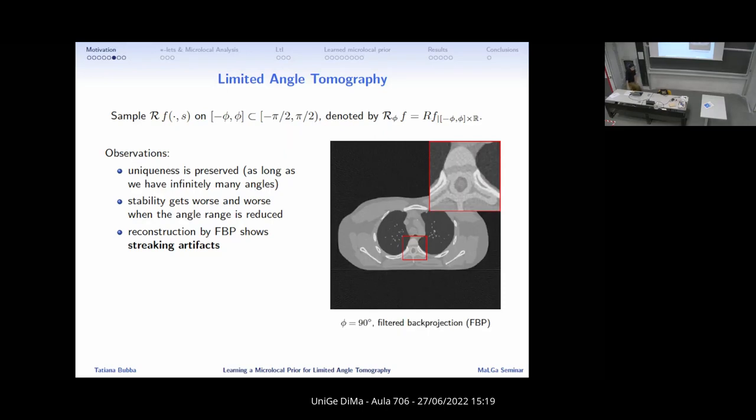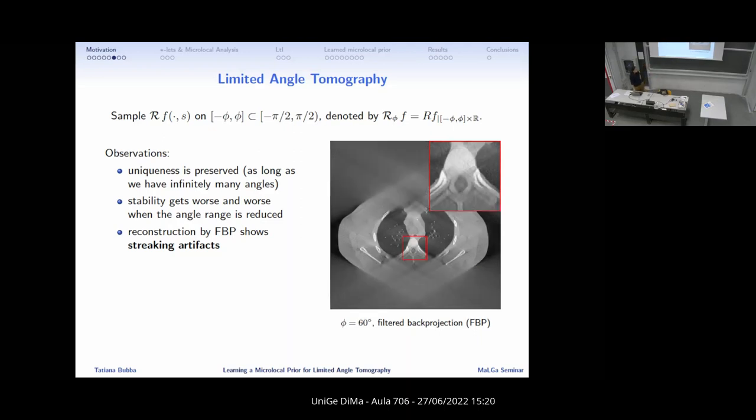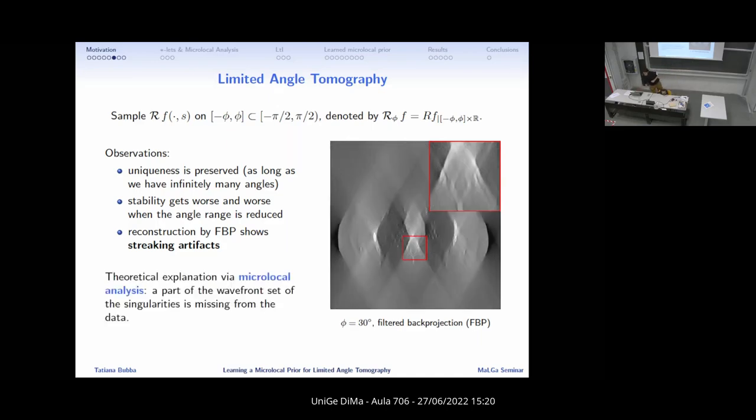The motivation comes from this. More generally, how limited angle tomography is modeled mathematically is that you just limit the visible wedge to a certain range, minus phi to phi. From a theoretical perspective, the uniqueness is generally preserved, but only if you assume to have infinitely many angles, which in practice you never have. The stability gets worse and worse when the range of the angle is decreased, and streaking artifacts start to appear.